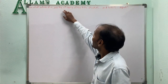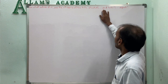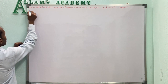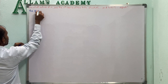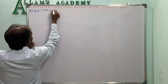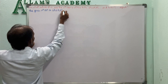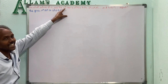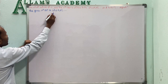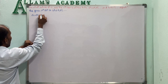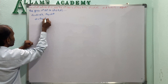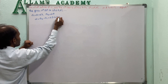For what value of N are the Nth terms of two APs — 63, 65, 67, and so on, and 3, 10, 17, and so on — equal? For the first series, A1 equals 63, A2 equals 65, and common difference D equals 65 minus 63 equals 2.